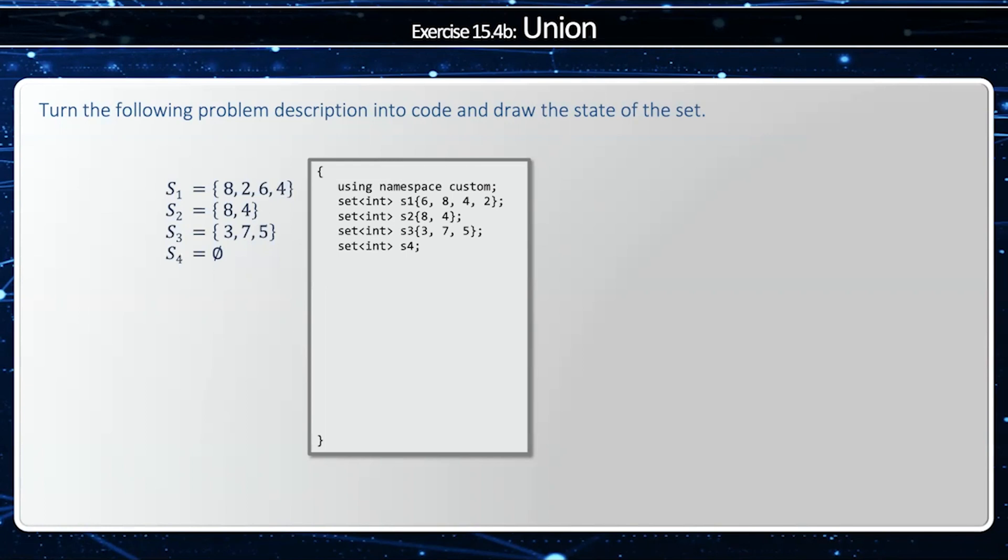Now, note that the set always stores the elements in sorted order. Therefore, my internal representation will be 2, 4, 6, 8, 4, 8, 3, 5, and 7 in the empty set.